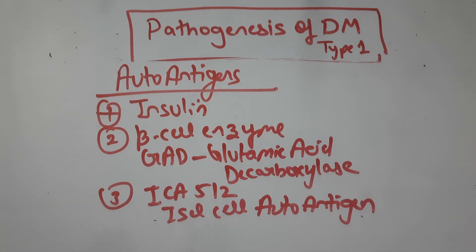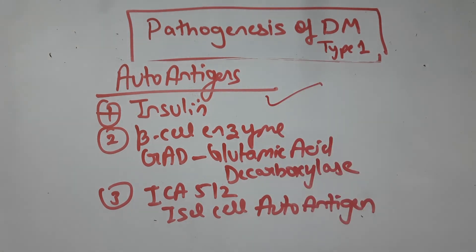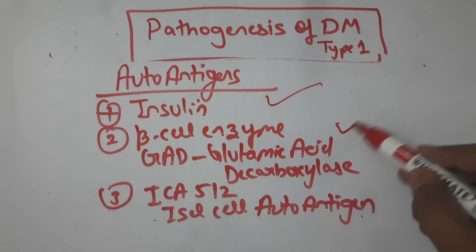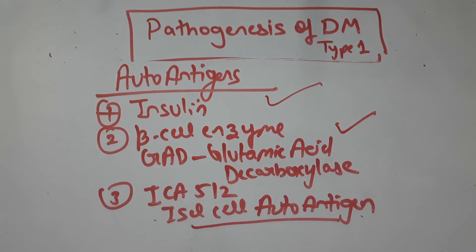The autoantigens against which T cells show a response are three: first, insulin; second, a beta cell enzyme called GAD (glutamic acid decarboxylase); and third, ICA512, that is islet cell autoantigen.